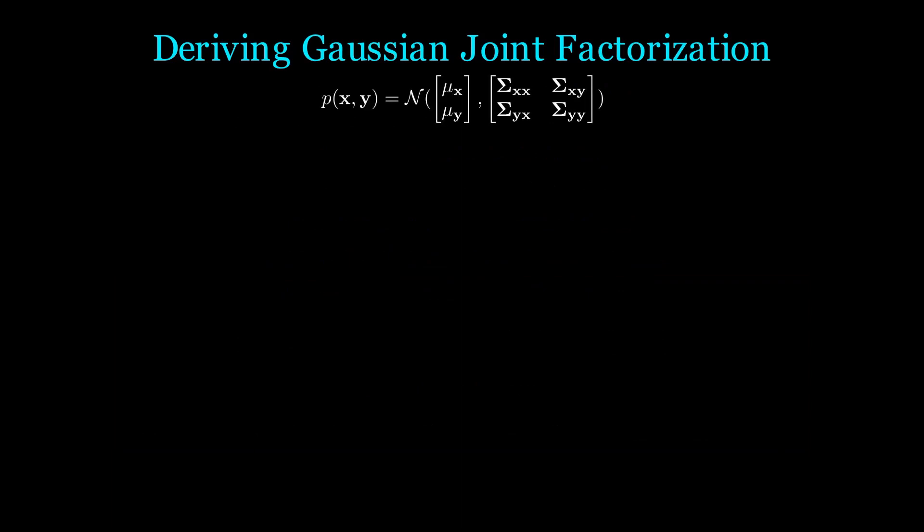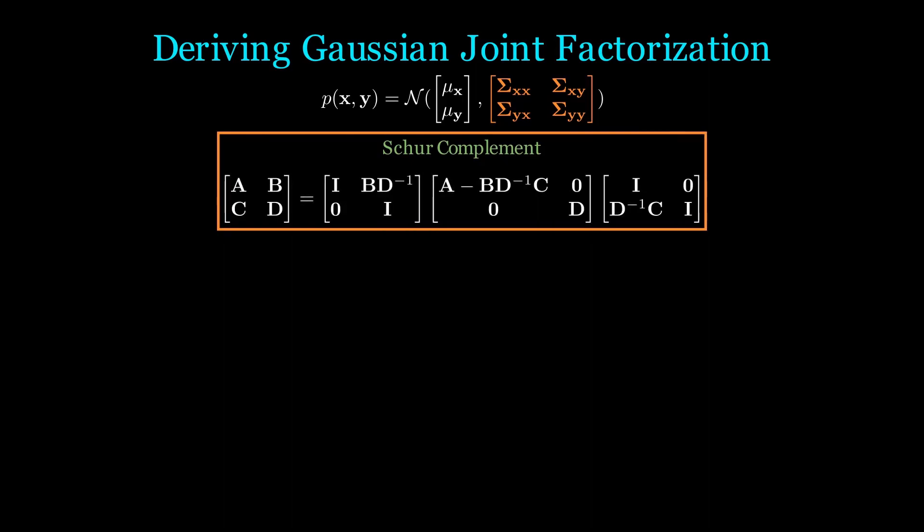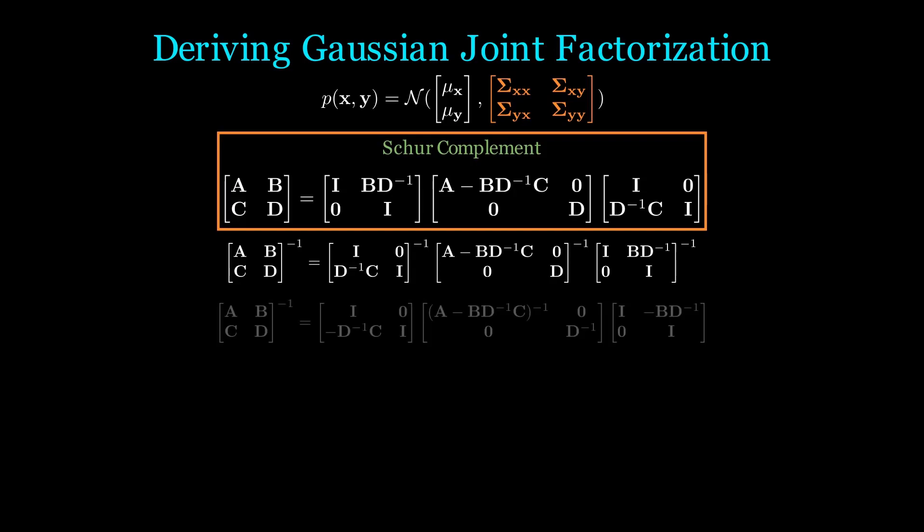To write out the Gaussian probability density, we need the inverse covariance. To help us do this, we are going to use the Schur complement. You can go ahead and check for yourself that multiplying what's on the right will give you the block matrix on the left.